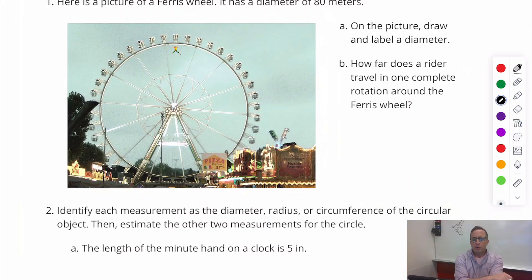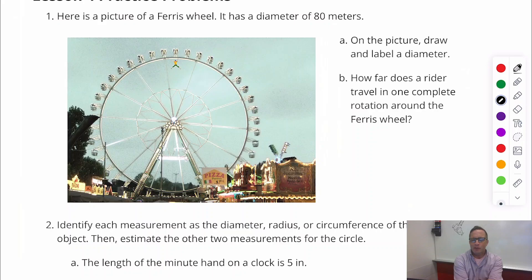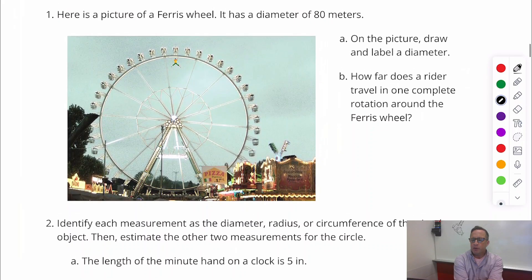Lesson 4, Practice Problems. Number 1, here is a picture of a Ferris wheel. It has a diameter of 80 meters. On the picture, draw and label a diameter.